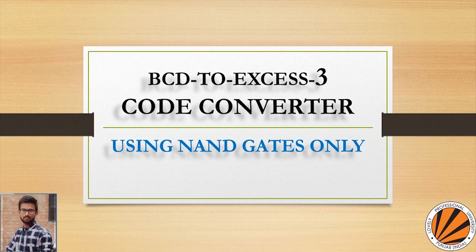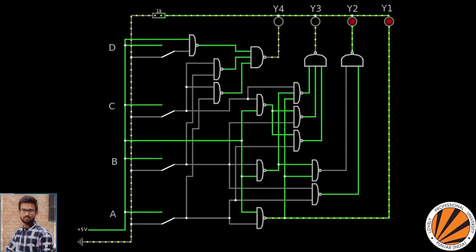Hello friends, in this video we are going to learn how to implement BCD to Excess-3 Code Converter using NAND gates only. This is the circuit diagram for BCD to Excess-3 Code Converter using NAND gates. You might be wondering how to get this converter using NAND gates only.